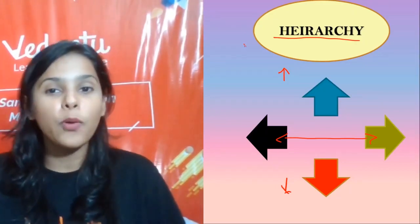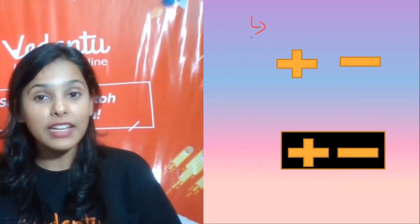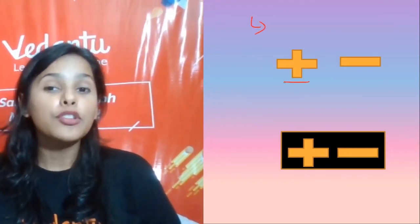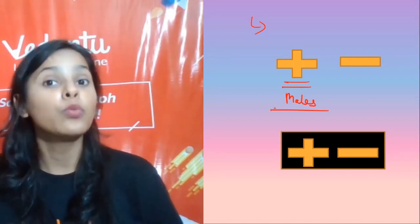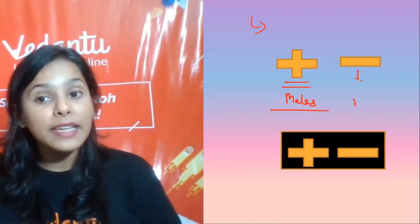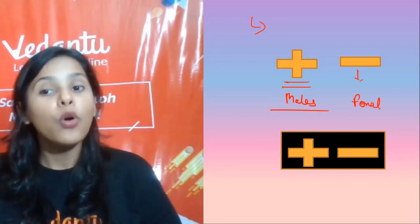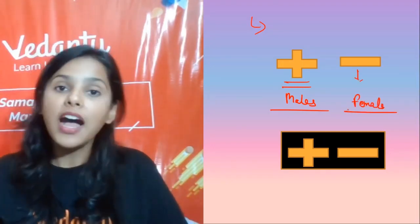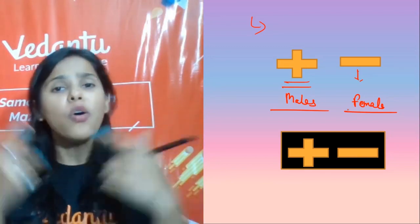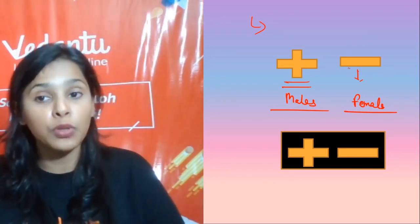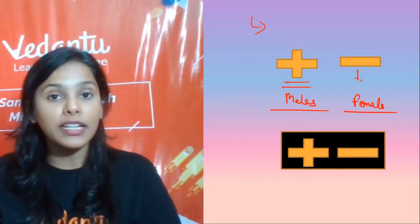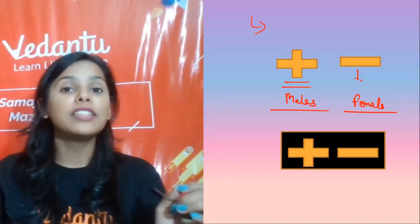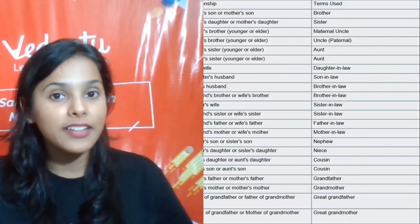Trick number one: denote all males with a plus sign, and all females — grandmother, mother, aunt — with a minus sign. For husband and wife, you put them into a box together. These are the core notation rules.